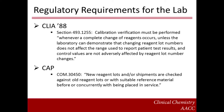Historically, laboratory validation practices were highly variable, and some laboratories did not do any validation at all. CLIA 88, however, stipulated that calibration verification must be performed whenever a complete change of reagent occurs, unless the laboratory can demonstrate that changing reagent lot numbers does not affect the range used to report patient test results, and control values are not adversely affected by reagent lot number changes. The enactment of CLIA 88 in 1992 thus led to the inclusion of reagent lot validation requirements in the accreditation checklist of numerous professional organizations. For example, Standard COM 30450 in the All-Common Checklist of the College of American Pathologists specifies that new reagent lots and/or shipments must be checked against old reagent lots or with suitable reference material before or concurrently with being placed in service.